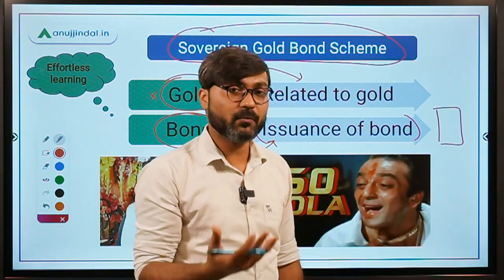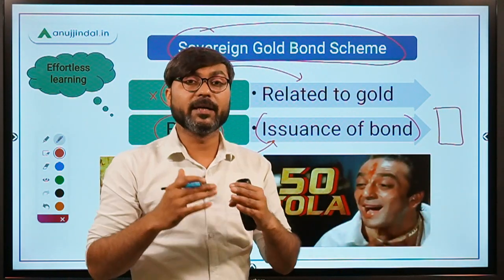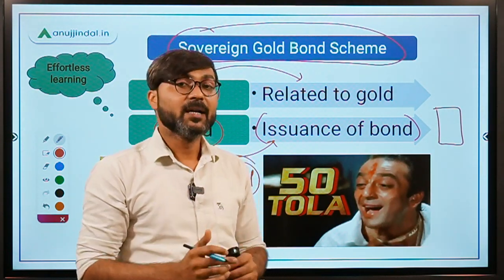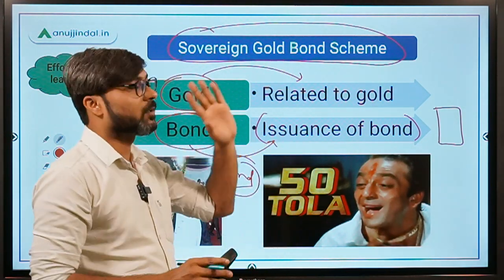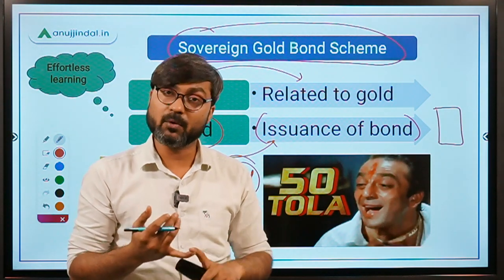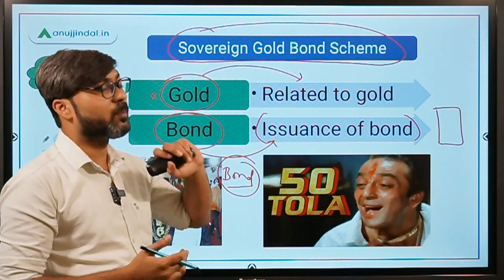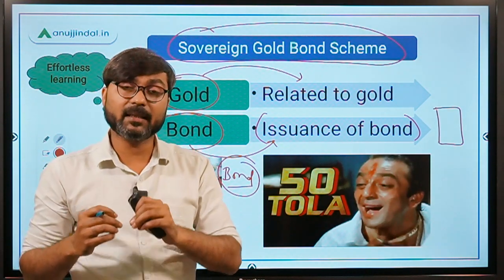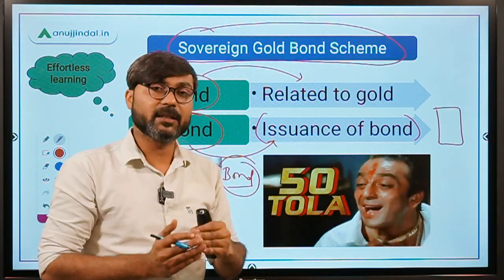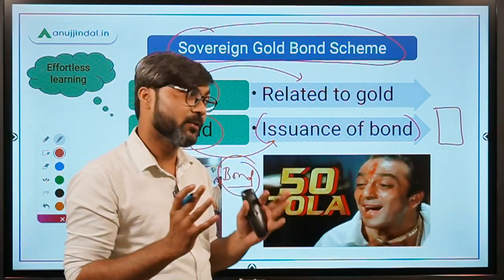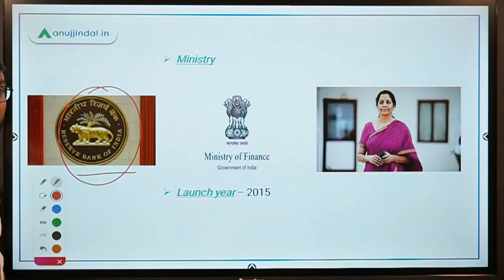These bonds are issued in the denomination of gold. The denomination will be decided according to the prevailing prices of gold. So the bonds are denominated in gold. These bonds are issued by the Reserve Bank of India and are government securities.